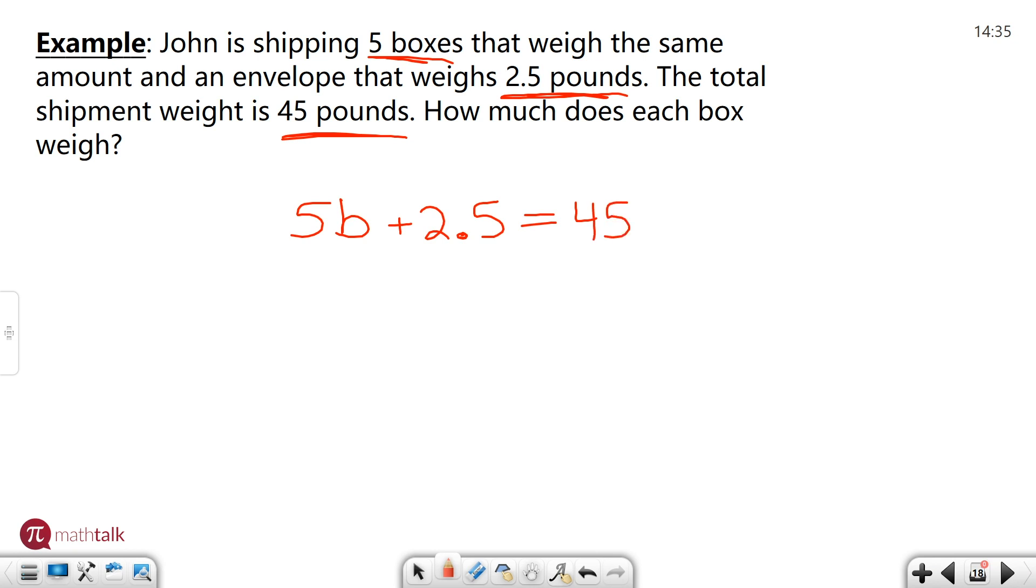Now all of a sudden we have an equation which we can solve it's a two-step equation. We want to solve for B for boxes. So first thing is let's get rid of this 2.5 from both sides and then that's going to go away we get 5B equals 42.5.